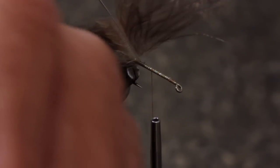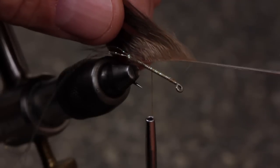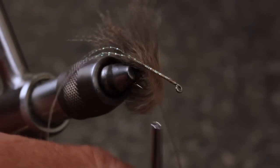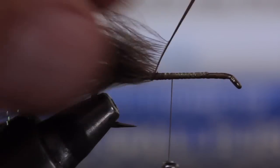With your hackle pliers, get hold of the bare stem and sweep the fibers rearward with your left hand. Wrap the plume around the shank, pulling the fibers rearward as you go. Try to keep them from becoming trapped in the hook bend. The wraps don't need to be touching. More of an open spiral is all that's needed.